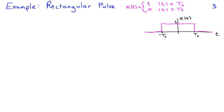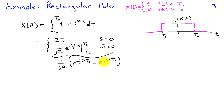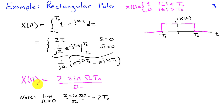The next example is a rectangular pulse. I'll define x of t as one when t is between minus t0 and t0, and zero outside that range. Substituting into the definition of the Fourier transform and integrating only from minus t0 to t0, when omega equals zero this is just the integral of one, giving two t0. When omega is not equal to zero, I get one over j omega times e to the minus j omega t evaluated at t0 and minus t0. This is just a sine function, and I can rewrite x of omega as two sine of omega t0 divided by omega.